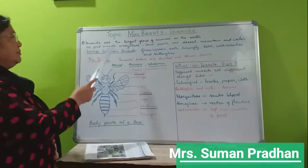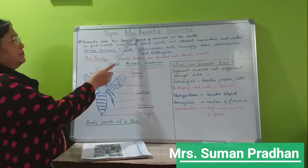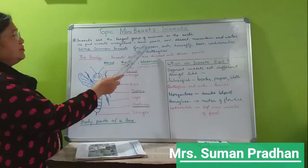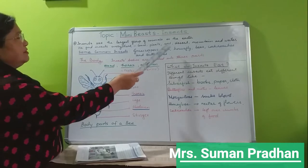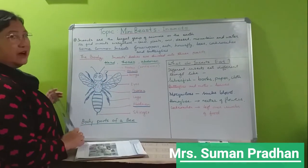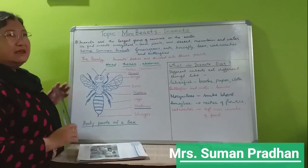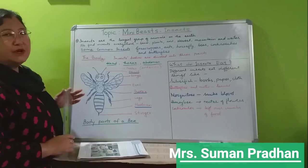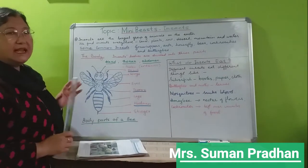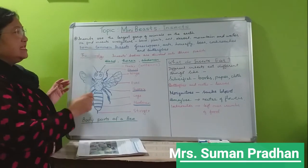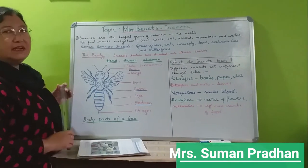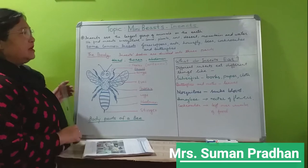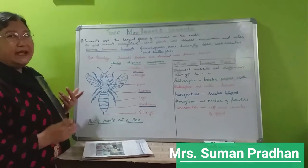Insects are the largest group of animals on the earth. Amongst all the animals — land animals, water animals, birds — among all these animals, insects cover the largest group of animals on earth.